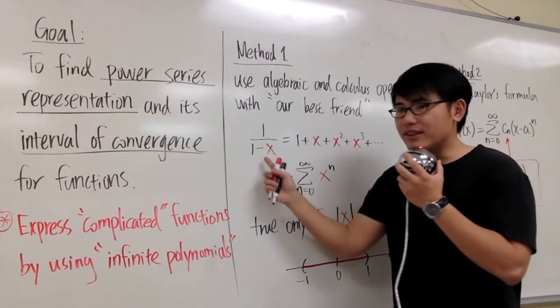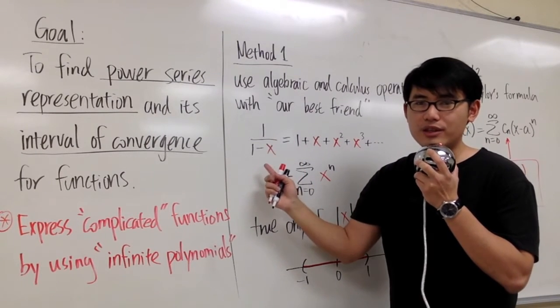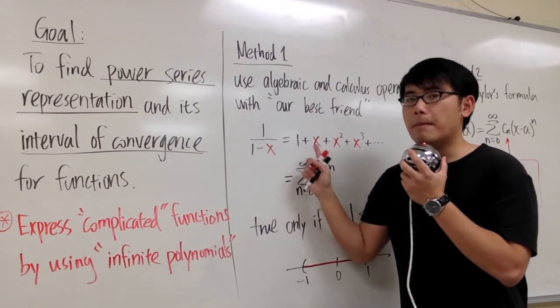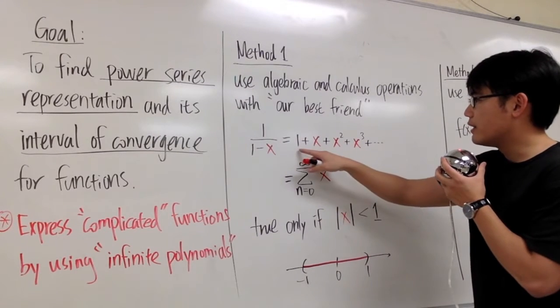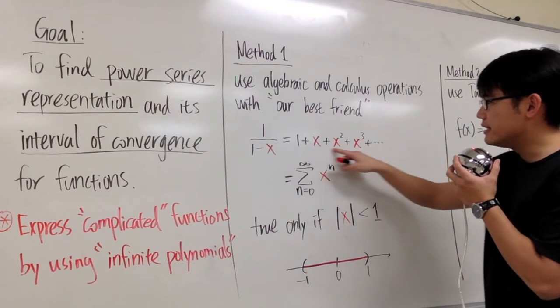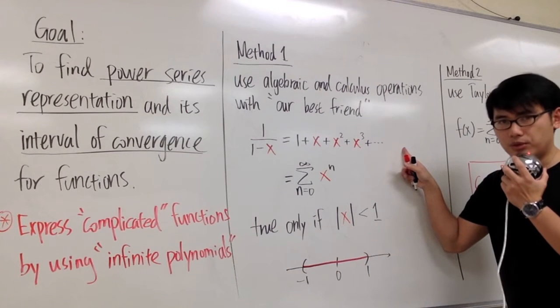As you can see, on the left-hand side, we have a rational function, 1 over 1 minus x, but then on the right-hand side, we have a polynomial, but since this keeps on going forever, this is an infinite polynomial.